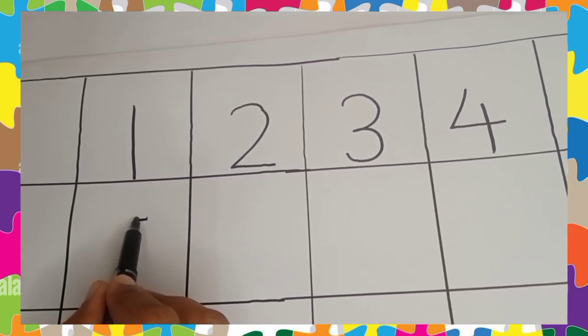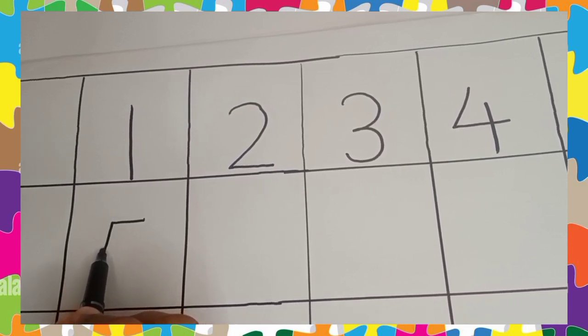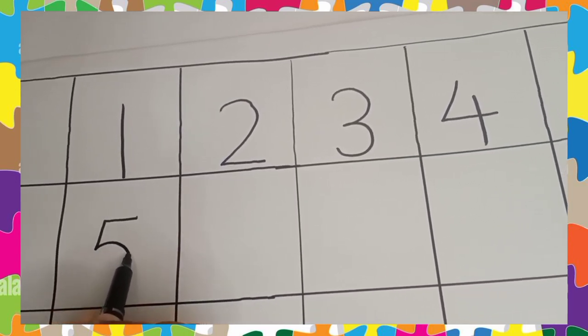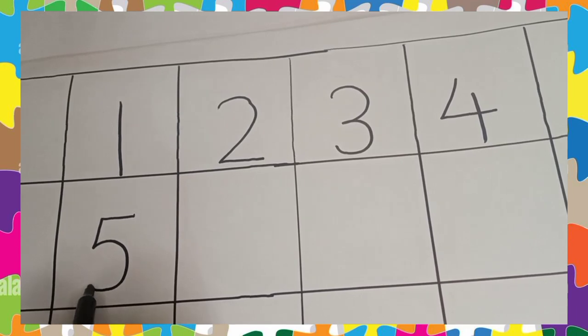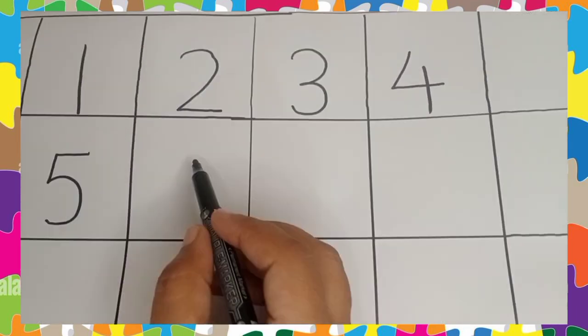Draw a line on the top. Go down and turn around. This makes the number 5. Number 5.